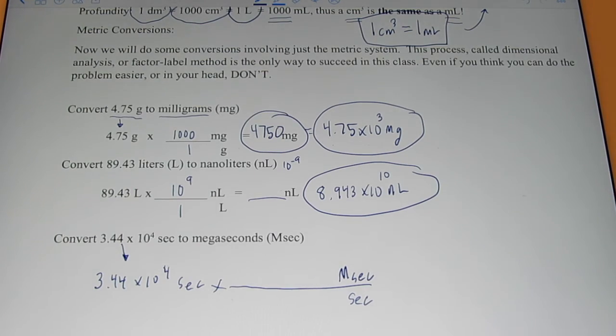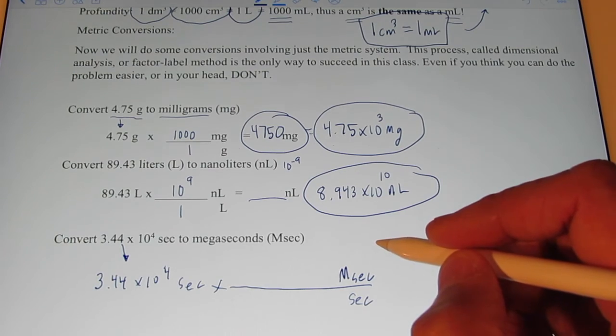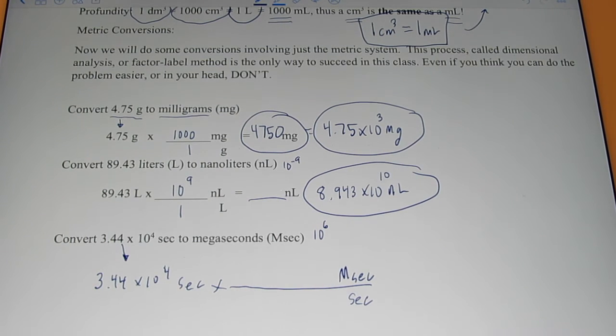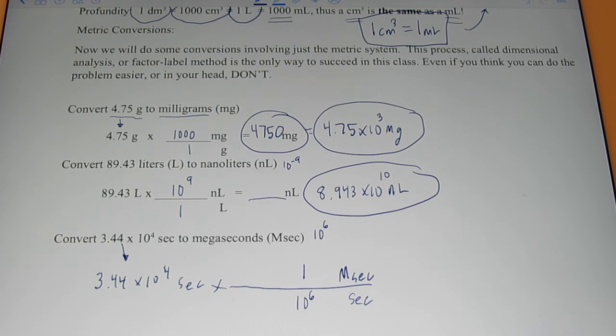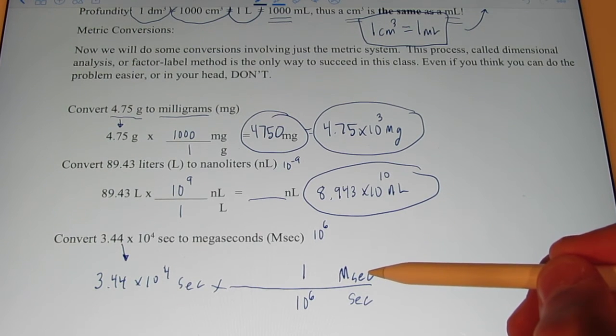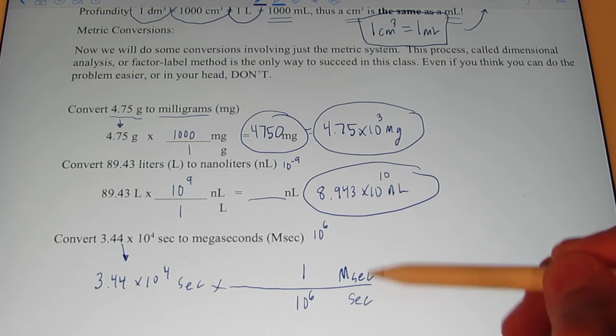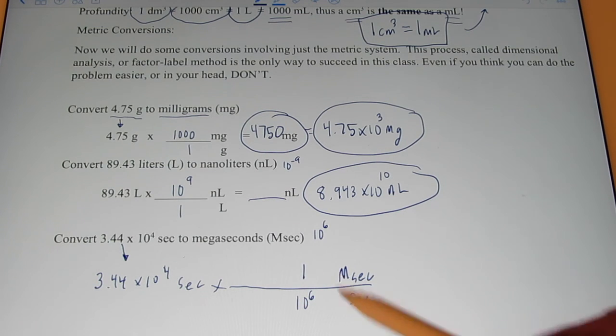And the unit we want to get into, we're going to put opposite. So, I want to put megaseconds on top. Now, what does mega mean? Mega means a million, ten to the sixth. In one megasecond, aren't there a million seconds? The quantity on top, megasecond, and the quantity on the bottom, million seconds, is the same amount of time. That's a true conversion factor.